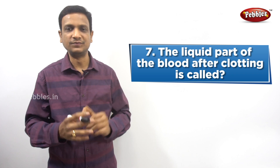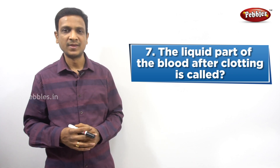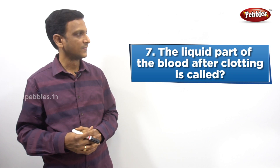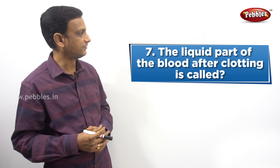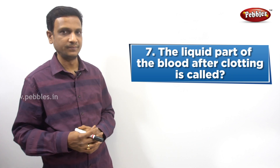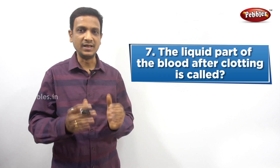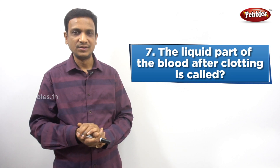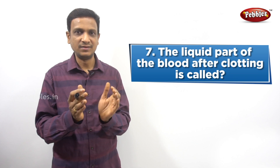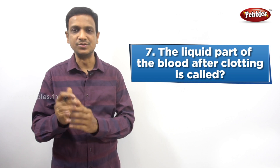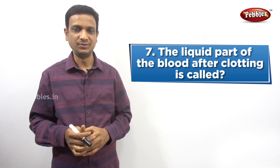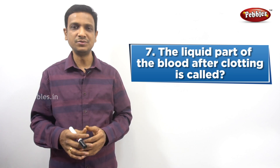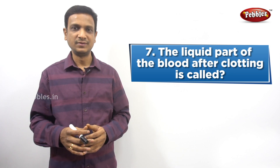The seventh question: the liquid part of the blood after clotting is called what? Blood is a fluid connective tissue - it is a connective tissue in the form of fluid.